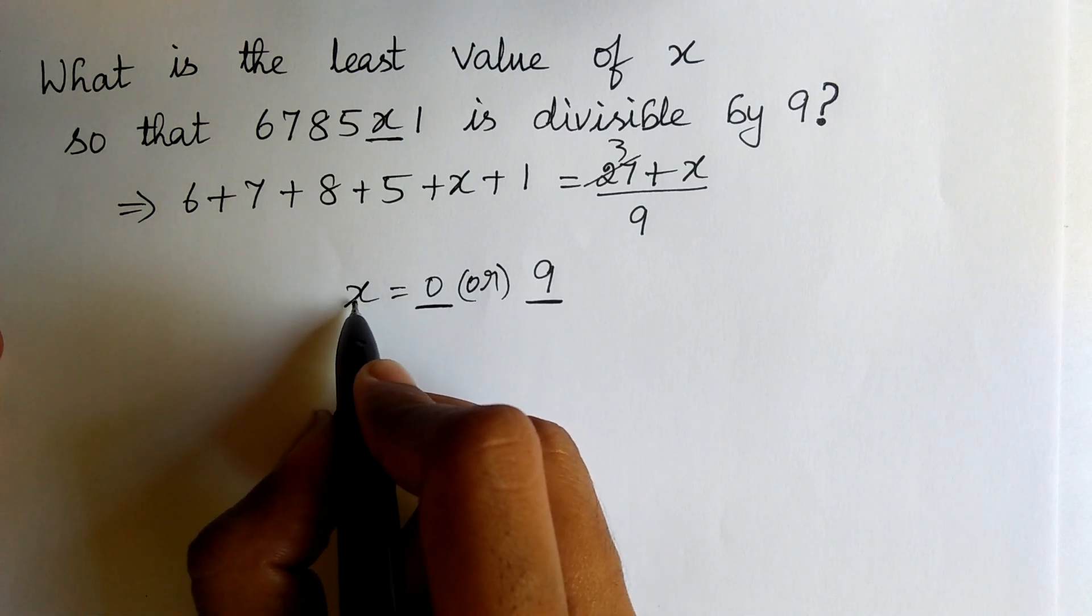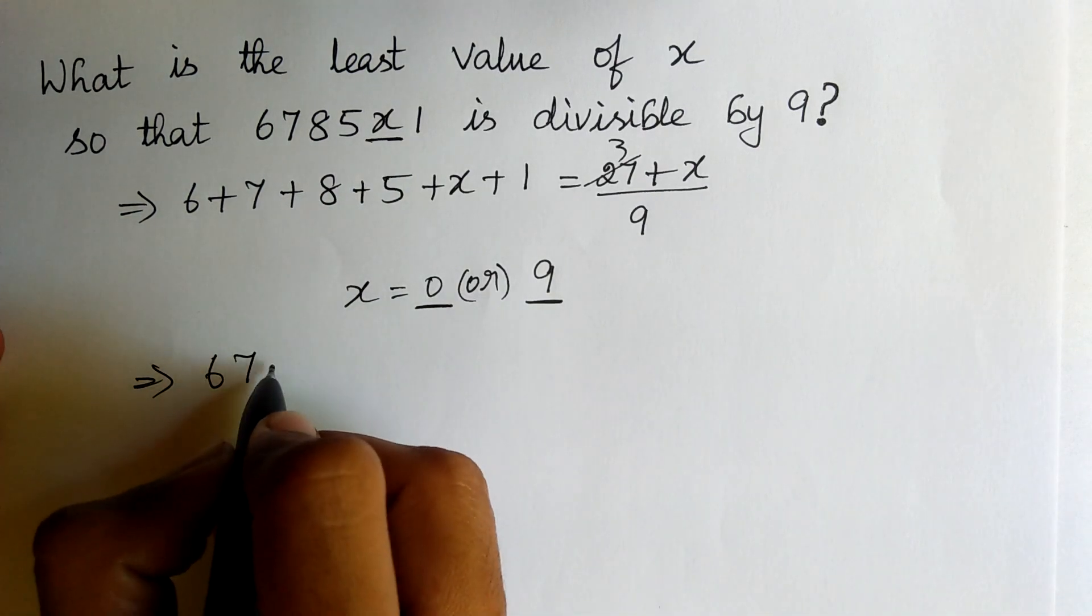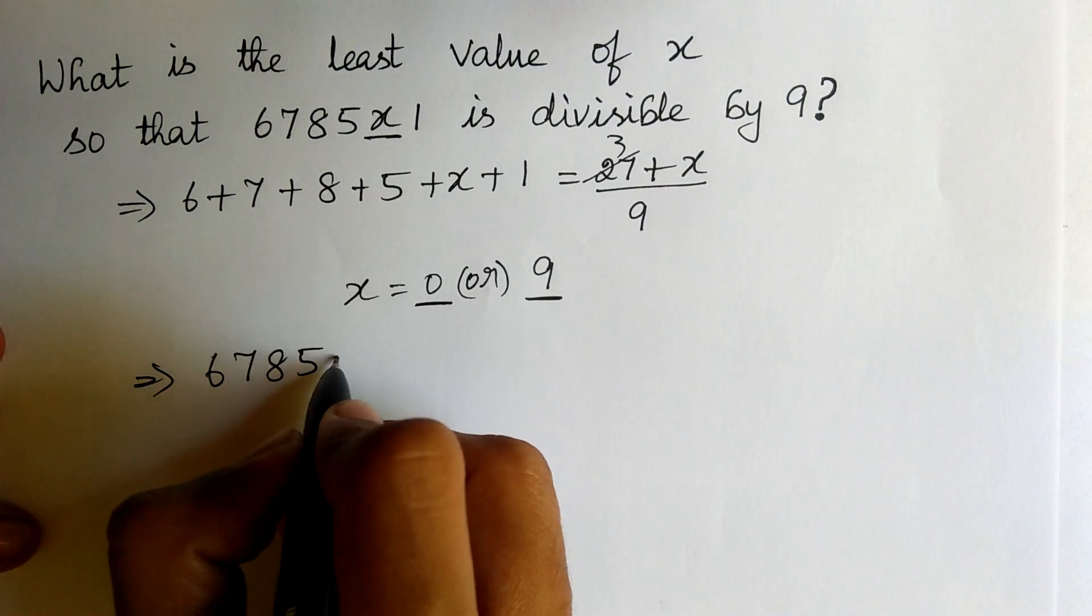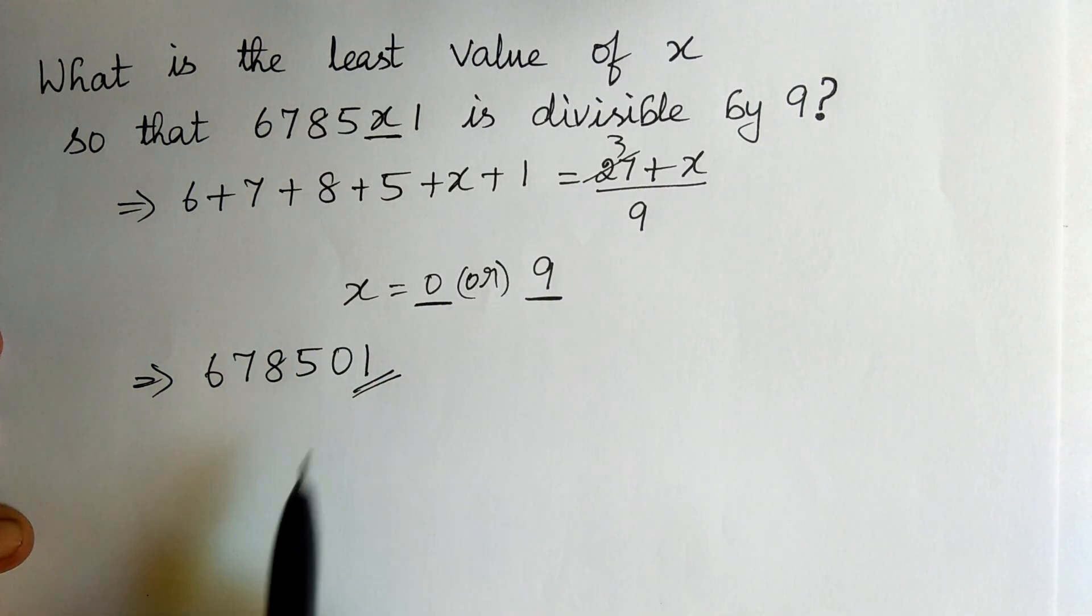The value for the unknown is 0. That is 678501 is the number we need to find.